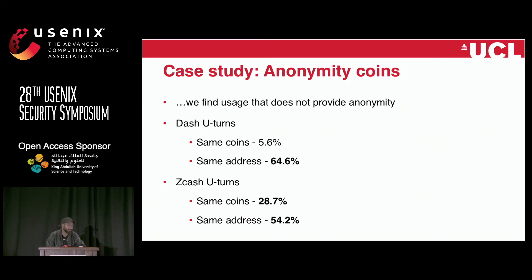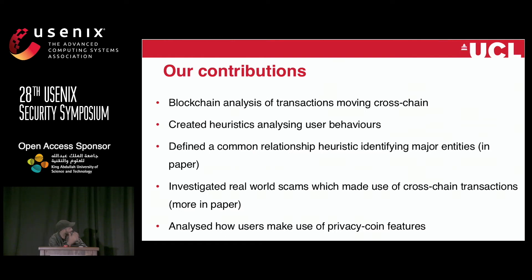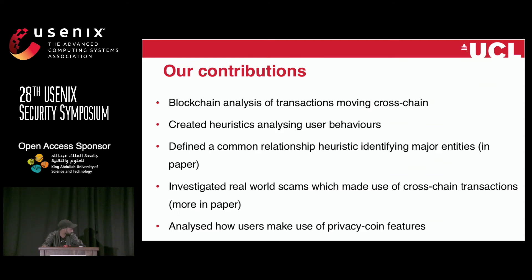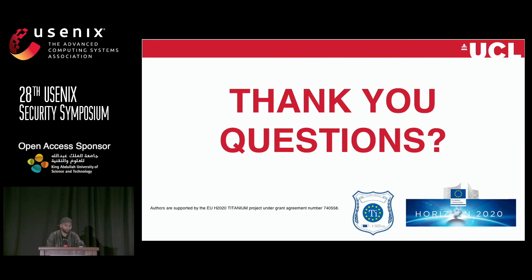The reason users didn't obtain anonymity is unclear — perhaps they don't know how to use the system, or perhaps they didn't want anonymity in the first place. In summary, our contributions include: tracking transactions that move across chain, heuristics including the relationship heuristic which shows how entities in the cross-chain ecosystem operate, real-world scam analysis, trading behavior analysis including fast transactions and arbitrage, and demonstrations of how privacy coin users interact with the cross-chain system. Thank you.